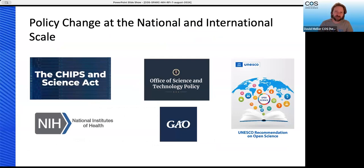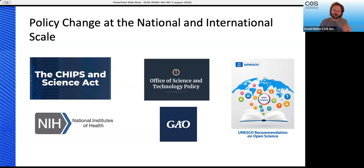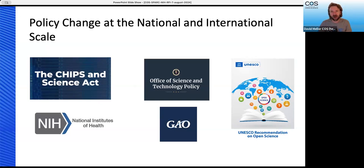This policy change is not occurring in a vacuum. For the past few decades, there's been a movement toward more open access, open data, and open science in the U.S. and internationally. In the U.S., especially in the past few years, there have been big moves toward supporting open research through legislation, reports from the Government Accountability Office about how much research should be made available, and UNESCO at the international level has been promoting open science as the standard practice across all scientific communities.